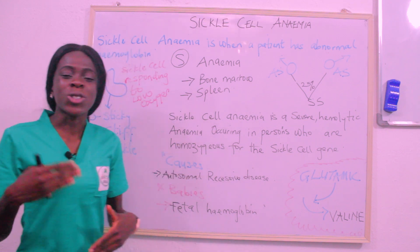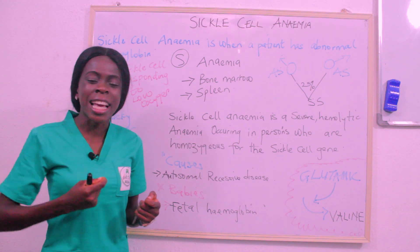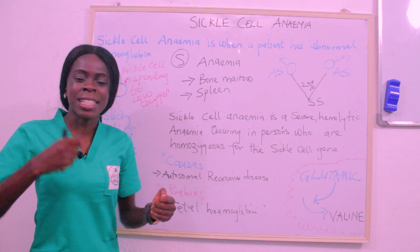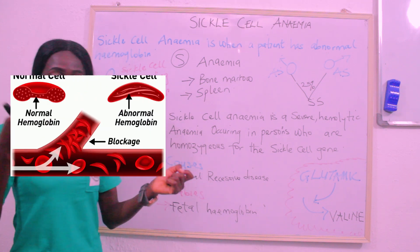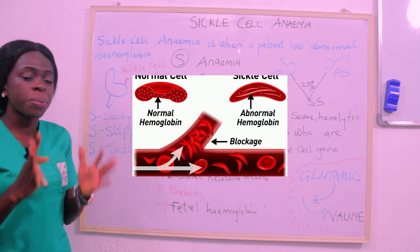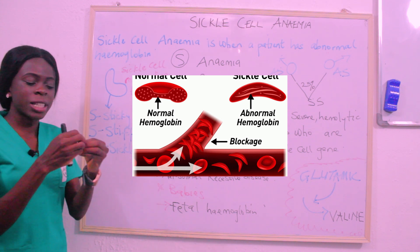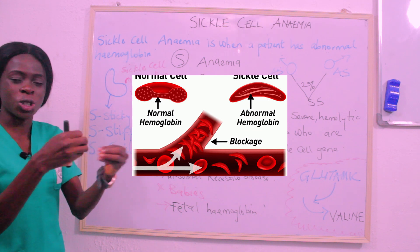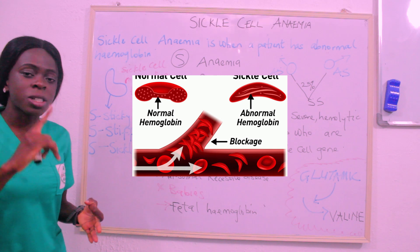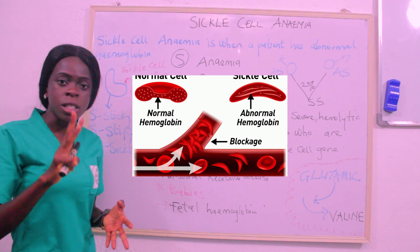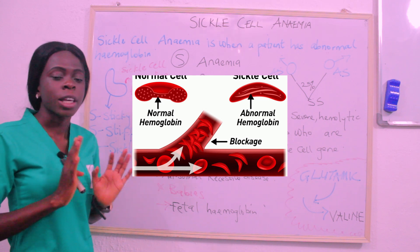There is something peculiar about this abnormal hemoglobin: they easily detect low oxygen — they are sensitive to low oxygen. So when they detect those low oxygen levels, what happens is that the red blood cells become sticky, they become stiff, and they become sickle-shaped. These are the three S's that happen when they detect low oxygen in the body.